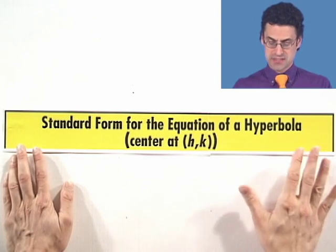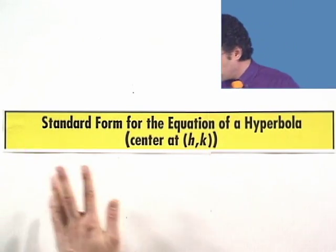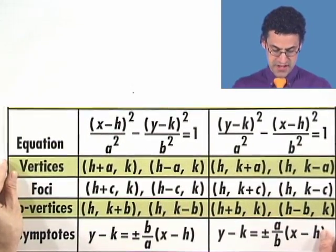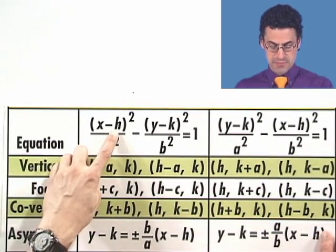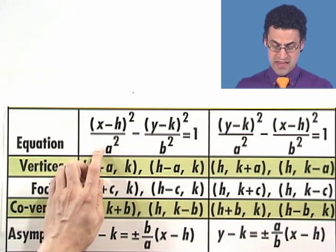Now, what about hyperbolas that are not perfectly centered at the origin? If the center of this hyperbola is going to be at h, k, then all the formulae just have x replaced by x minus h and y replaced by y minus k, and everything else is the same.